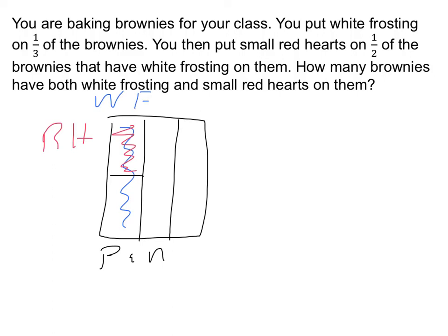We see that we've got one piece of the whole pan that has both white frosting and red hearts. But look at the question — it says how many brownies have both. The problem is, I don't know how many brownies are in this one piece. There are lots of possibilities: I could have cut the pan into many small brownies or just a few large ones. The answer is there's not enough information.